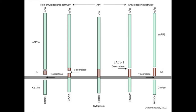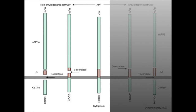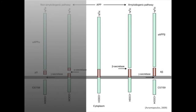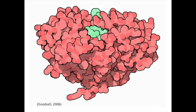Cleavage sites on APP determine the size and properties of the amyloid beta. The functions of the other forms of amyloid beta are not well understood, but they are necessary in metabolic pathways and cognition. The process of normal cleavage of APP with alpha secretase and the aberrant cleavage with BACE-1 into amyloid beta-42 are seen in this figure. The video will focus on the cleavage process by BACE-1 at the atomic scale.